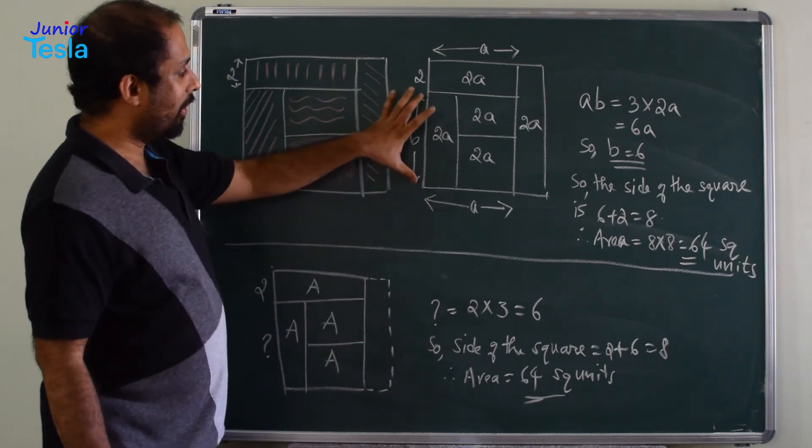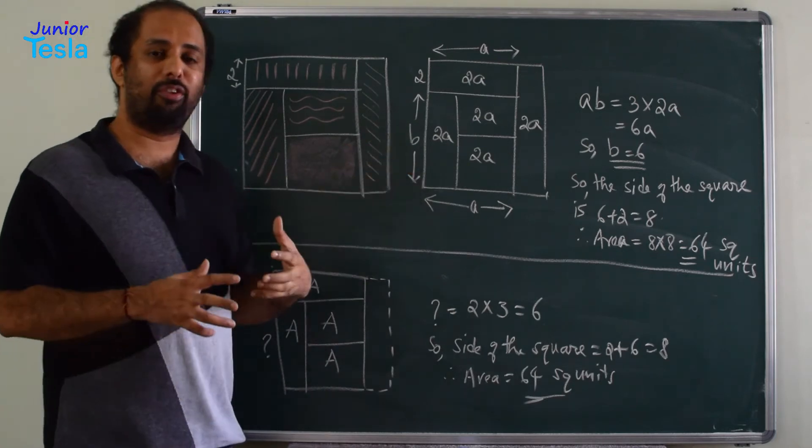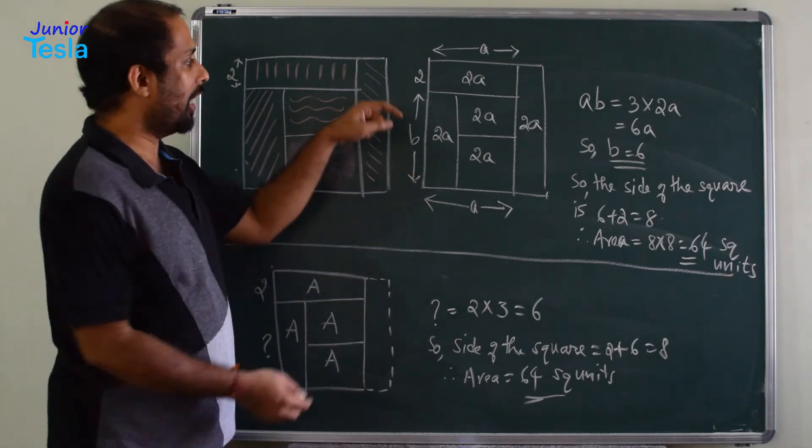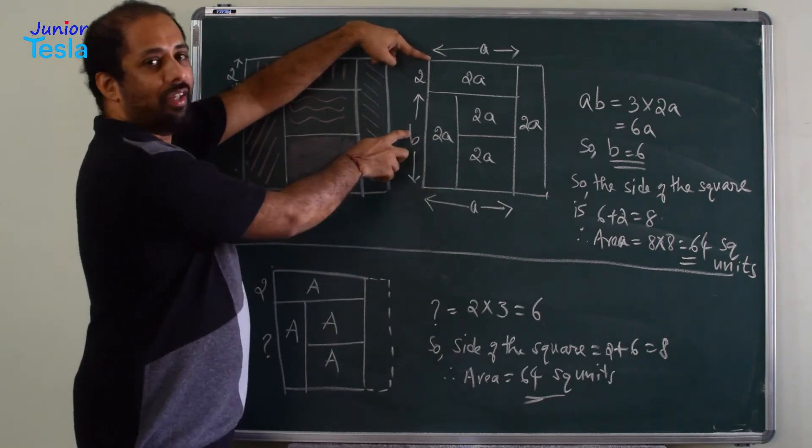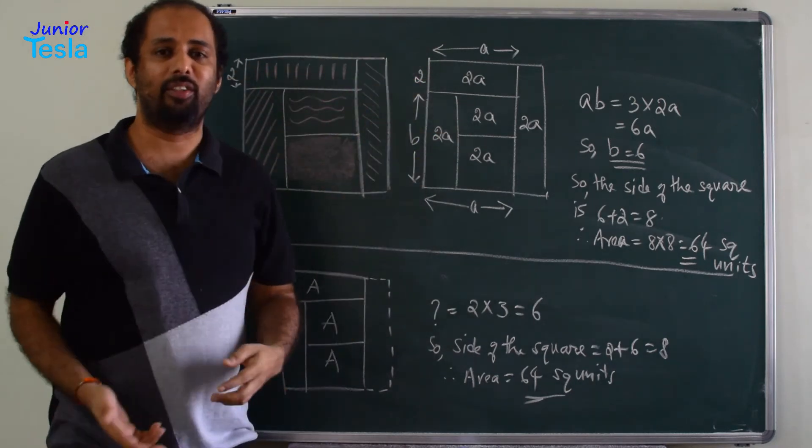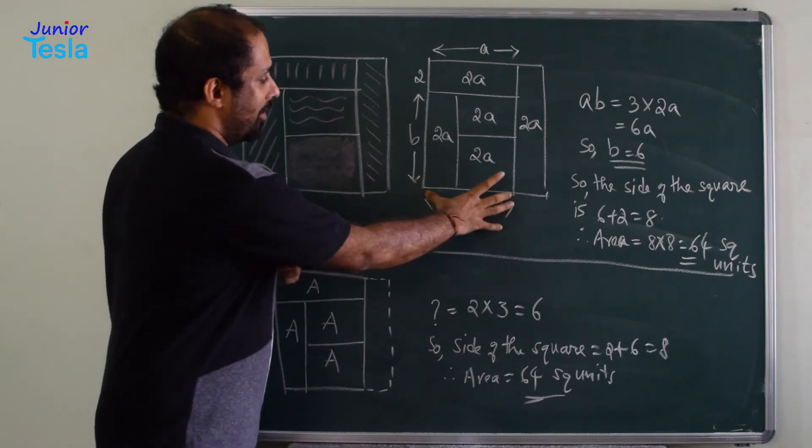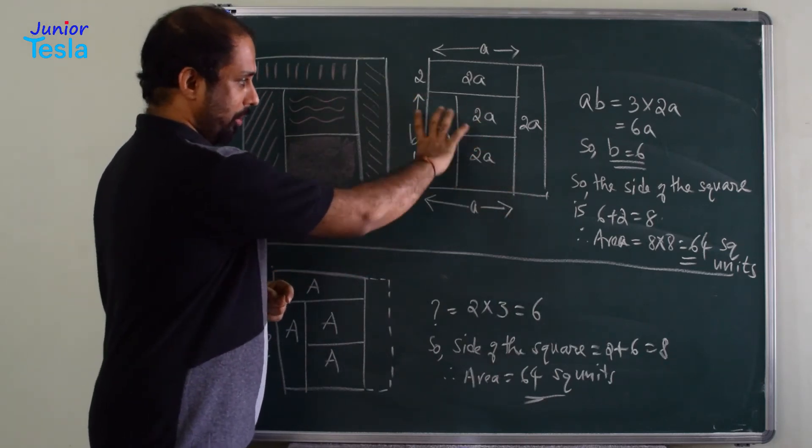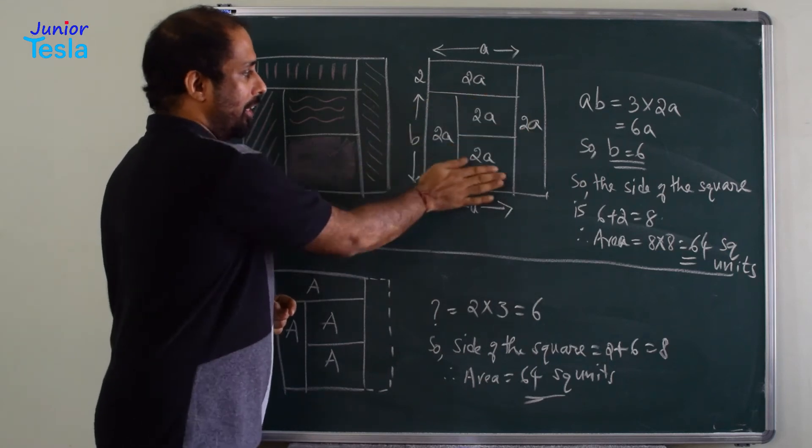Now, since I do not know what is this length, I will call it as B. Finally, I should be able to find the value of B, because I need to find the total length of this particular side. So 2 plus B, if I know the value of B, I can tell what is this length and then I can tell the total area. So I will take it as B and this is already taken as A. So B into A will be BA or AB, that will be this area, this particular region.